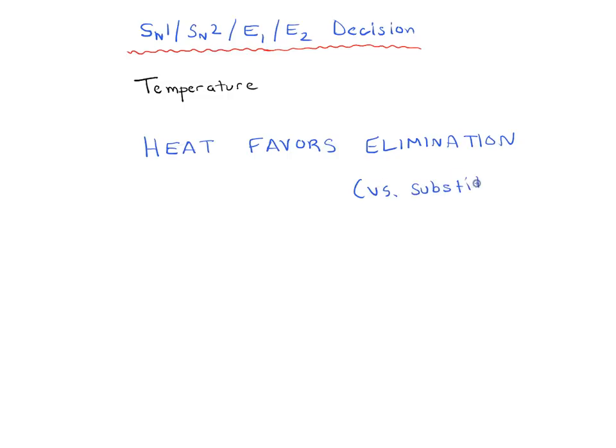The reason why has to do with thermodynamics, specifically with the entropy of elimination reactions compared to substitution reactions. We talked about that in a previous video if you're interested. But really, if you're not sure and you're looking at an SN1 versus E1 decision and you notice there is heat, it's going to be more likely that you're looking at an elimination type reaction.